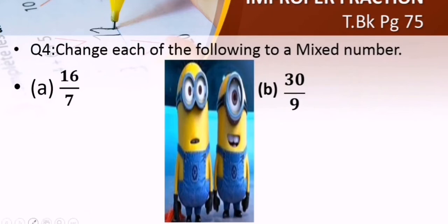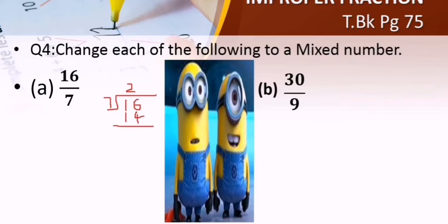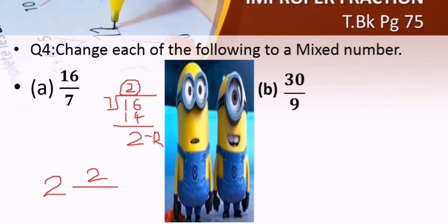Now we have some examples from our textbook, page 75, question 4: change each of the following to a mixed number. Part A: 16 by 7. We put 16 inside and 7 outside. Now start division: 7 times 2 we get 14, and 16 minus 14 we get 2. The quotient 2 becomes the whole number, and the remainder 2 becomes the numerator.